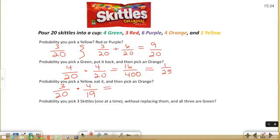The rules to apply though, multiply across, you get 12 out of 380, which actually reduces to 3 out of 95.